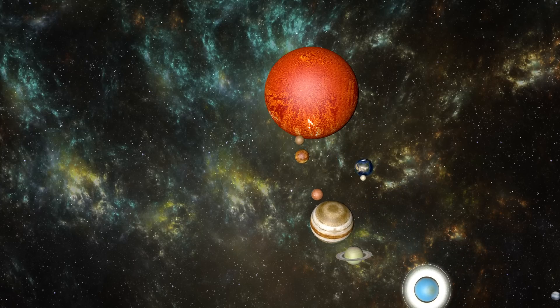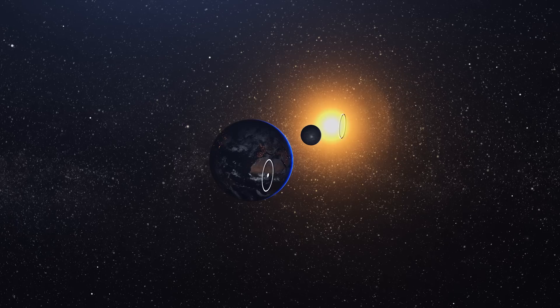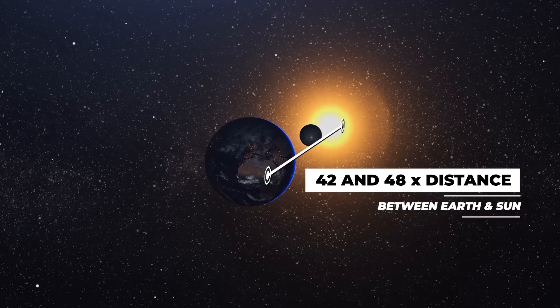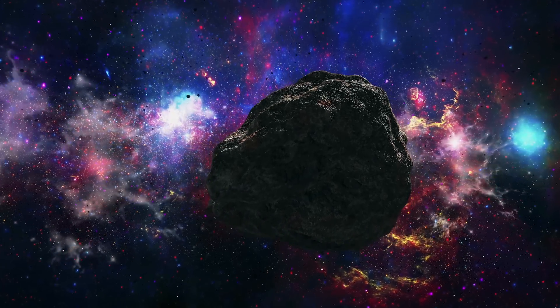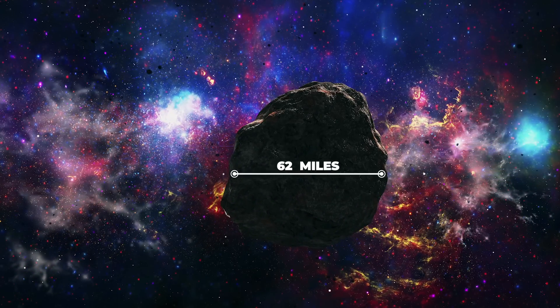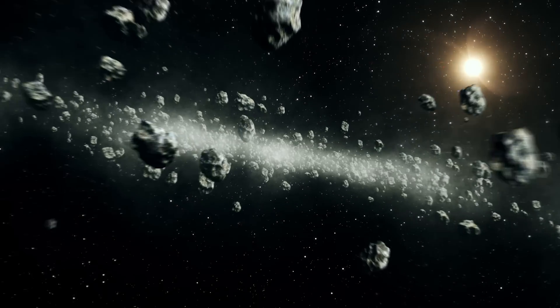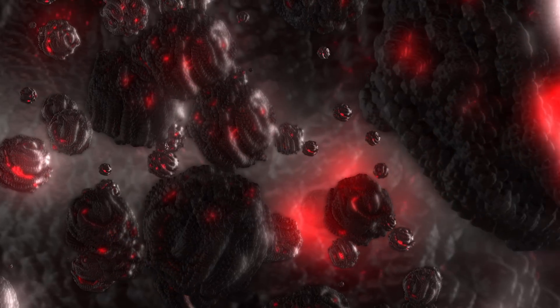The densest part of the Kuiper Belt is located between 42 and 48 times the distance between Earth and the Sun. It is believed to contain thousands of objects larger than 62 miles in diameter and billions of smaller objects, many of which are short period comets.